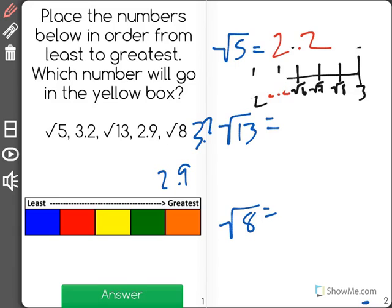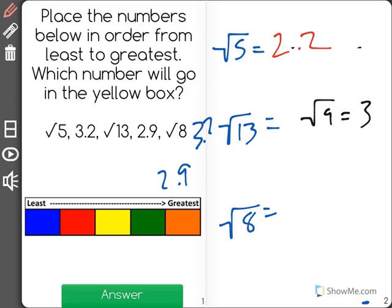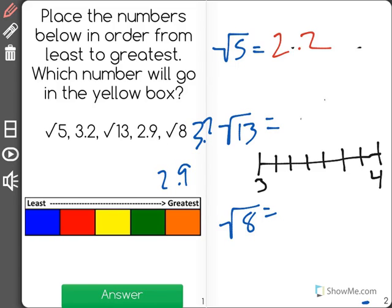Now I'm going to repeat the same process for root 13. I know that root 9 is equal to 3 and root 16 is equal to 4. So in between 9 and 16 there are seven equal points. So that means that in between 3 and 4 there will fit 7 equal points: 1, 2, 3, 4, 5, 6, and 7.